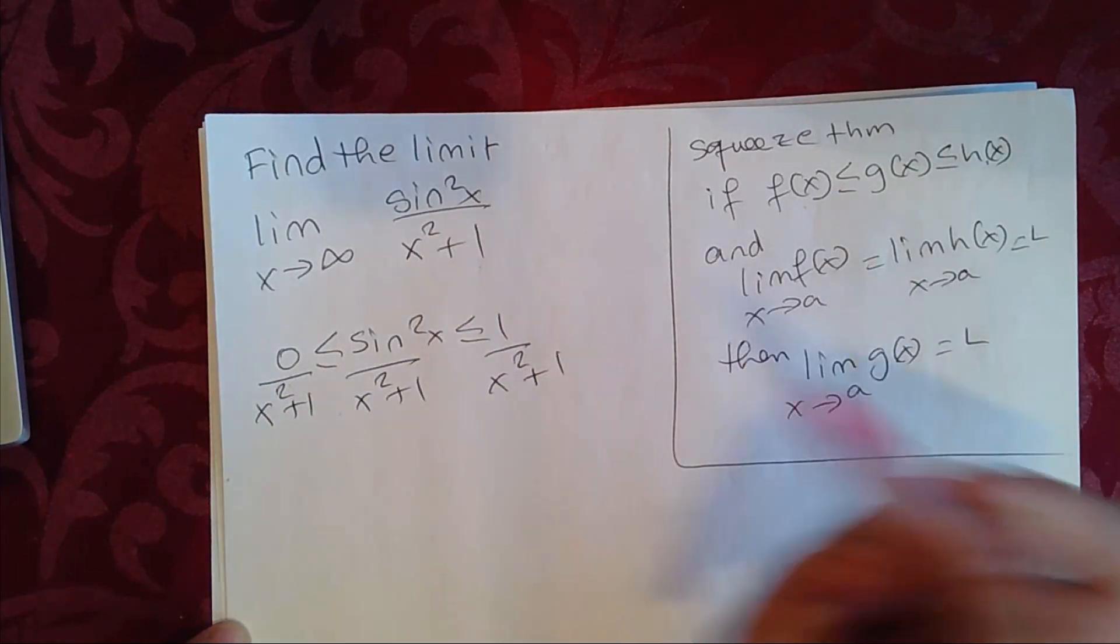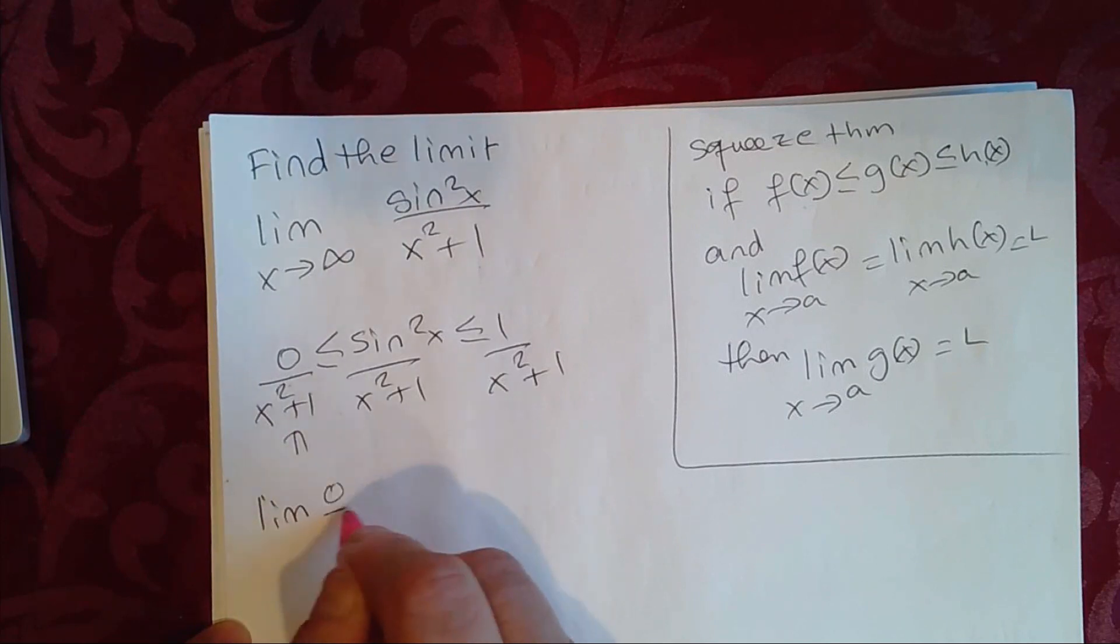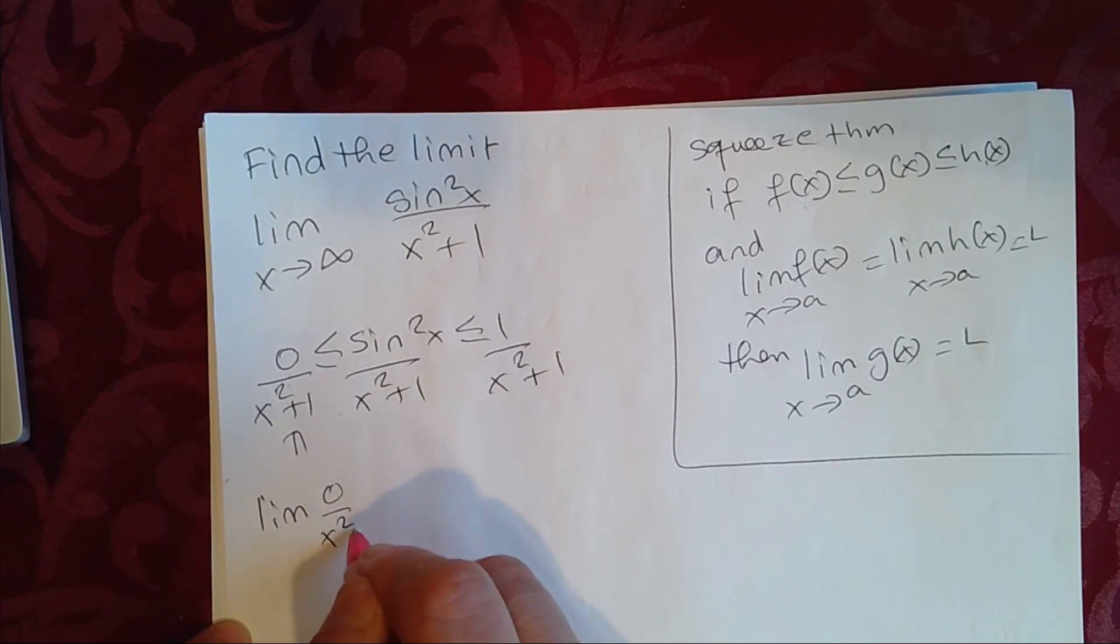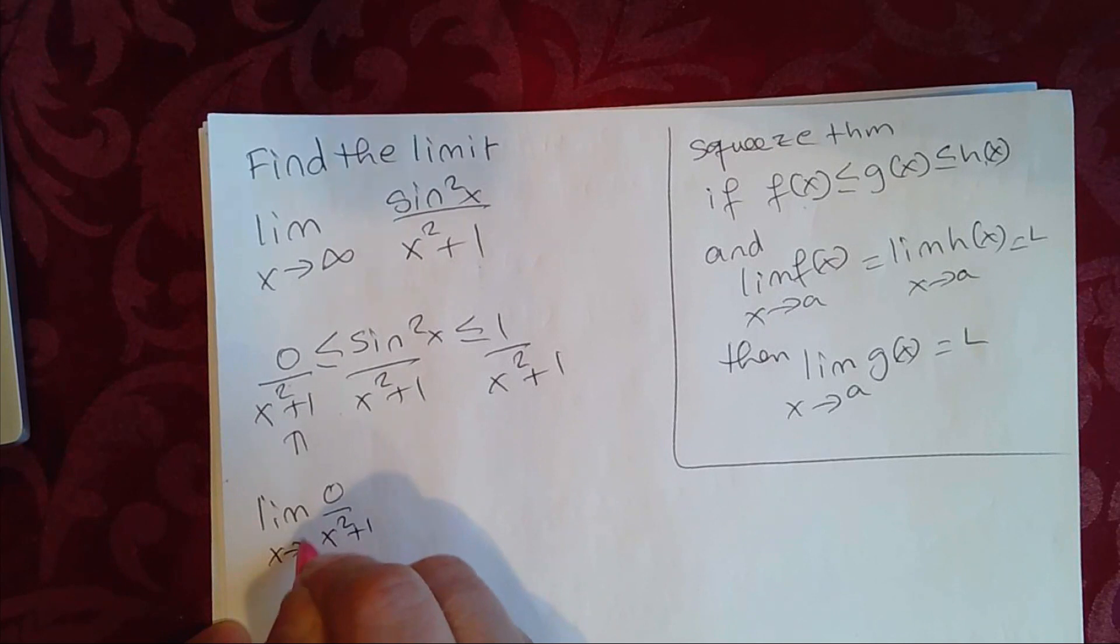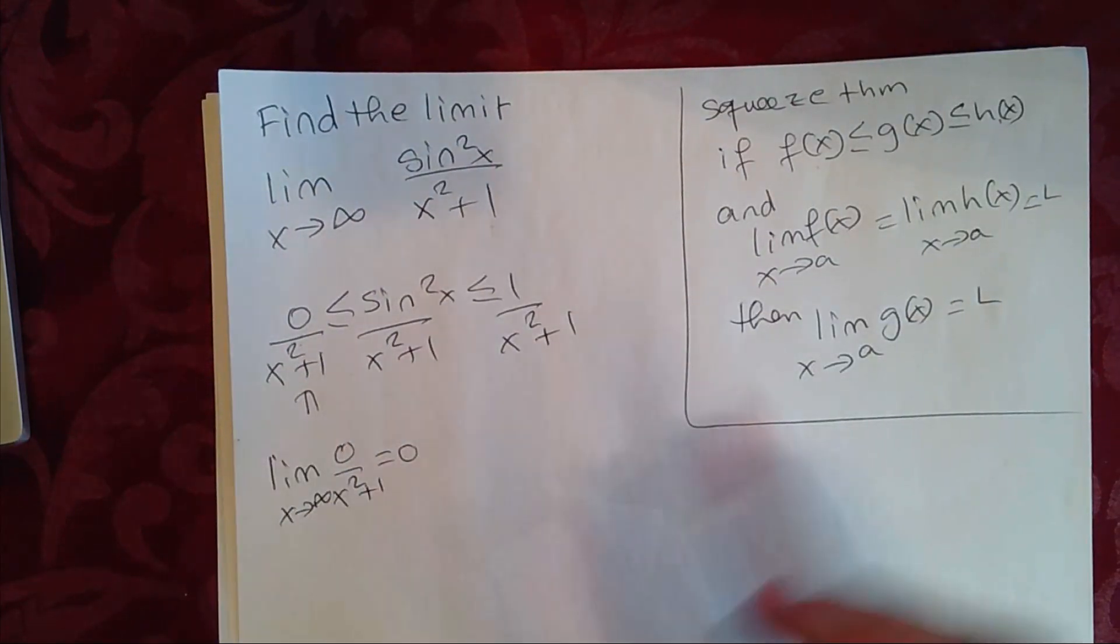So the limit of this, the limit of 0 over x squared plus 1 as x approaches infinity, this is equal to 0. So we've done that part right here.